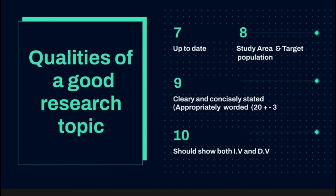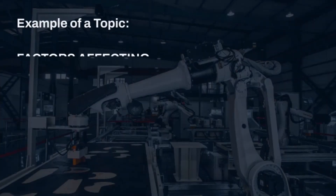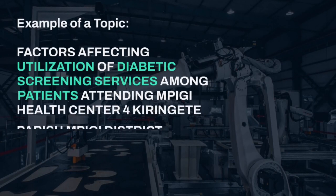The research topic should also have a study area — for example, a hospital, a village, a school, or an institution. It should be clearly and concisely stated, appropriately worded, and not exceed 20 words. Additionally, it should show both the independent and the dependent variable. Let's dissect one topic to examine all these qualities.